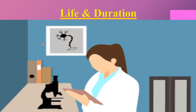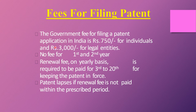Life and duration of patent: the term of the patent is 20 years from the date of filing for all types of invention. Priority date — first to file. The date of the patent is the date of filing the application, and the term of the patent is counted from this date. The government fee for filing a patent application in India is 750 rupees per individual and 3,000 rupees for legal entities. There is no fee for the first and second year. A renewable fee on a yearly basis is required for the third year through the 20th year to keep the patent in force. The patent lapses if the renewable fee is not paid within the prescribed period.